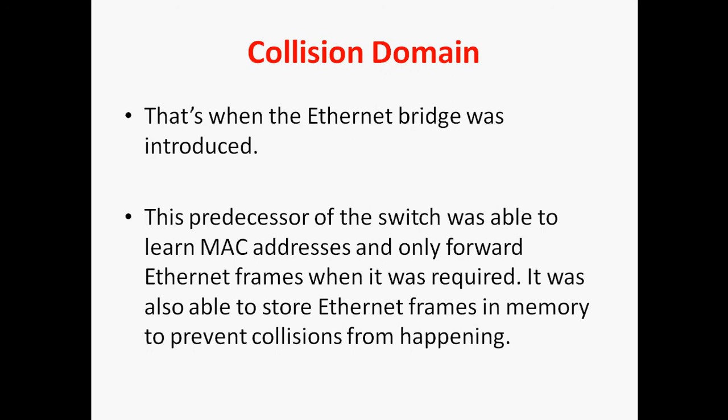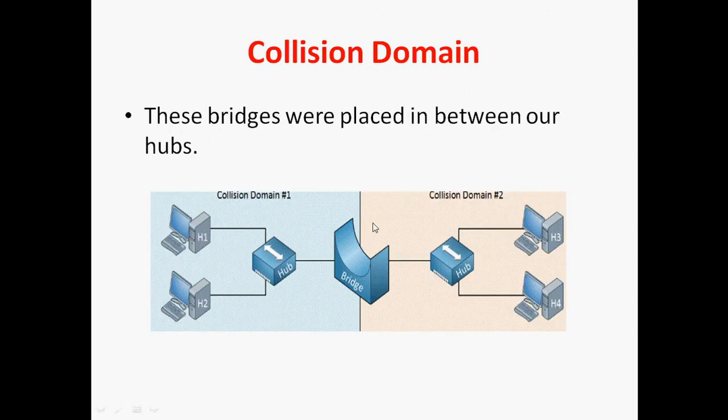Because hub is a dumb device, collisions occur. But an Ethernet bridge is a kind of switch — it learns the MAC address and stores it in a table, so it won't cause collision domain issues. At any time, we can send and receive. The bridge is placed between two hubs — this is one collision domain and that is another collision domain.